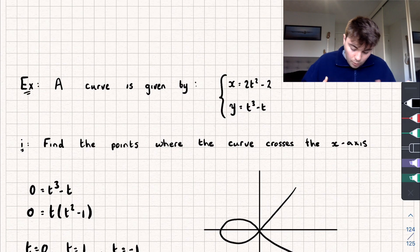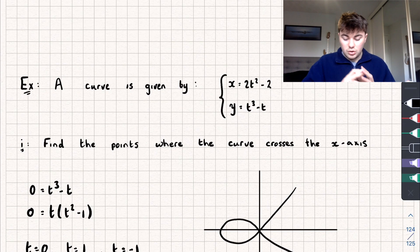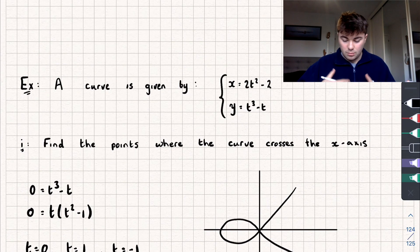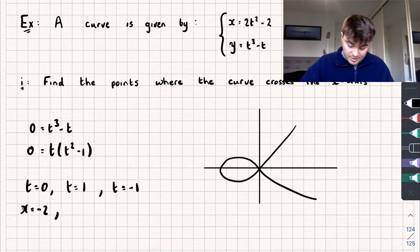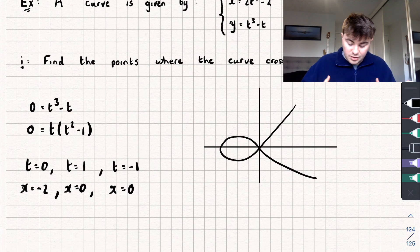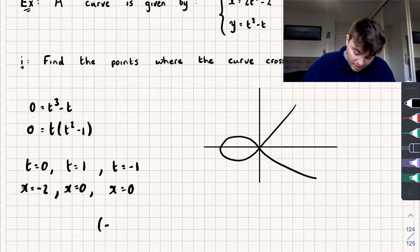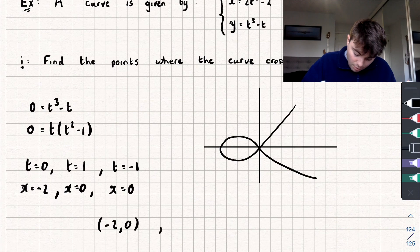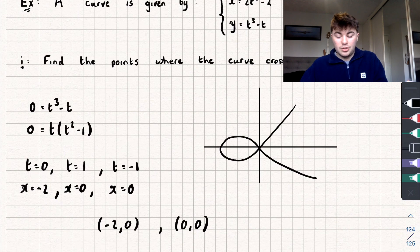When t equals 1, we've got 2 multiplied by 1 squared, which is 1, 2 subtract 2 is 0, so x equals 0. And the same follows for when t equals negative 1, so we also have x equals 0. So my curve is going to cross the x-axis at these points here: negative 2 comma 0 and 0 comma 0.